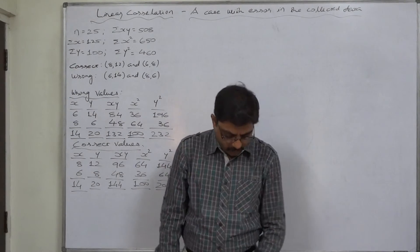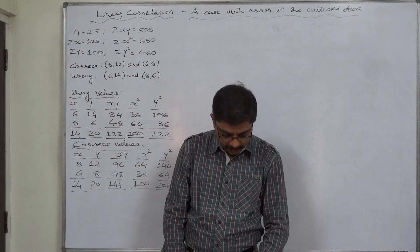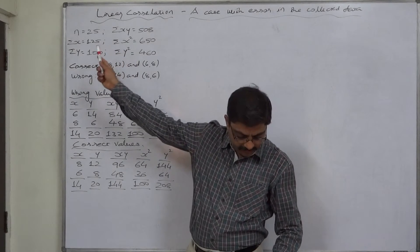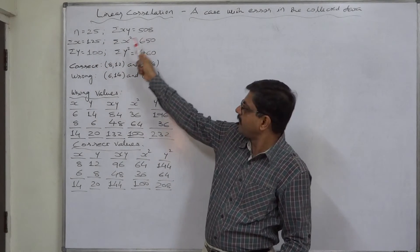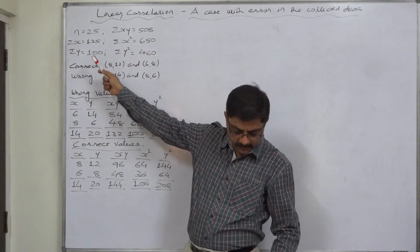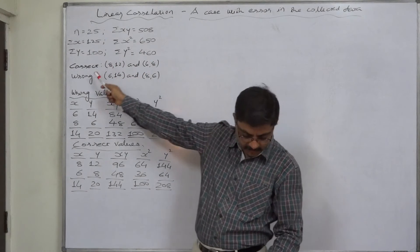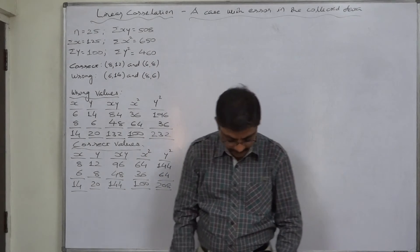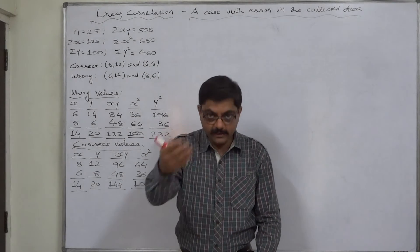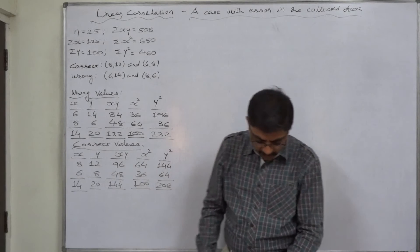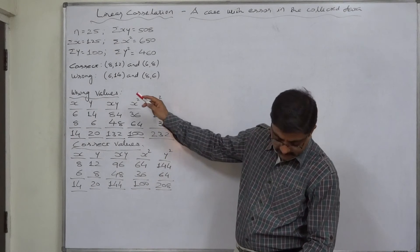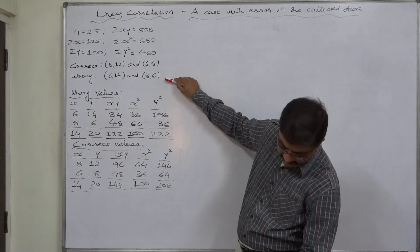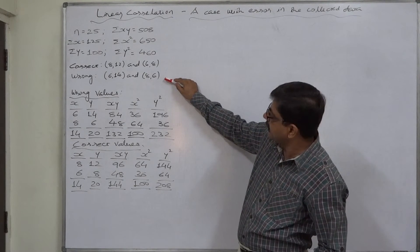The case is the following results have been obtained for two variables x and y: n=25, Σxy=508, Σx=125, Σx²=650, Σy=100, and Σy²=460. While checking later on, it was found that two pairs (8,12) and (6,8) were wrongly taken as (6,14) and (8,6).